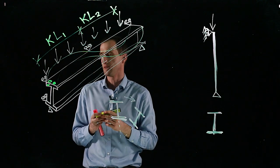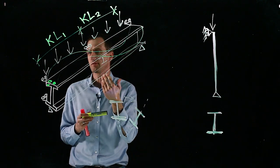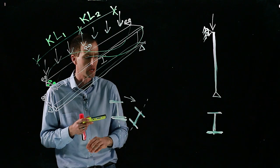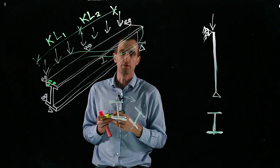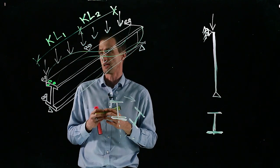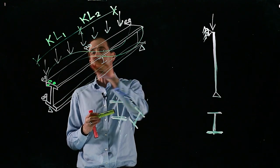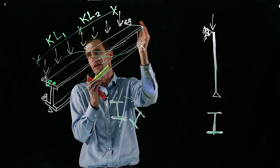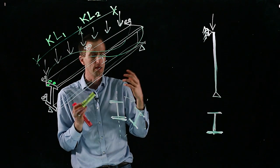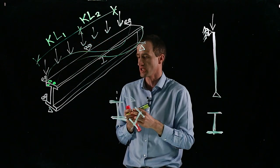It is also influenced by stabilizing and destabilizing loads, which you'll refer to your own local code. We're not going to discuss that now. But just to be aware, you're designing between points of lateral support. So those become the L values that go in your bending design calculations.